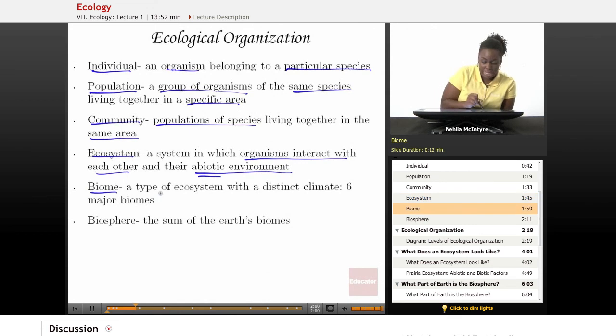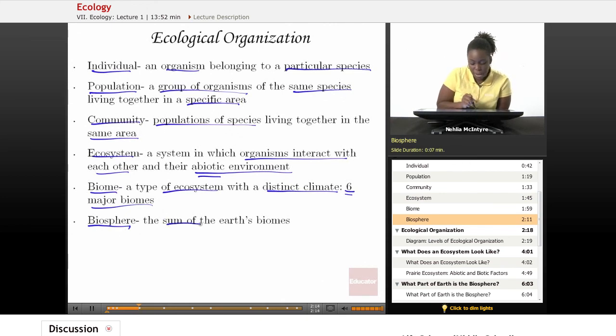A biome is a type of ecosystem with a distinct climate. And there are six major types of biomes on Earth, which we'll mention later. And then finally, we have the biosphere. And the biosphere is the sum of the Earth's biomes all together.